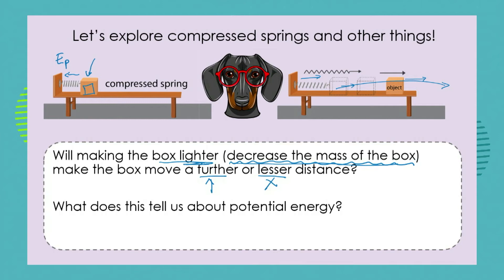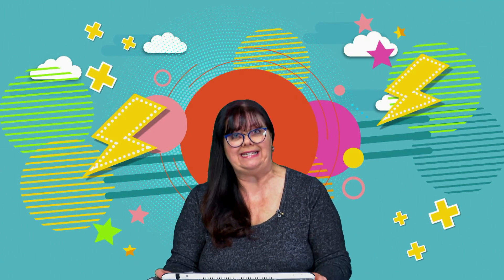What does this tell us about potential energy? It's linked to the kinetic energy that is the result of that potential energy. It's the same potential energy, the same spring, the same distance pulled back, but the box is moving further — not because we gave it more potential energy, but because we decreased the mass of what was moving. So: same potential energy, but less mass equals more kinetic energy. We can either change the potential energy or change the mass of the object, and we can change the kinetic energy as well.